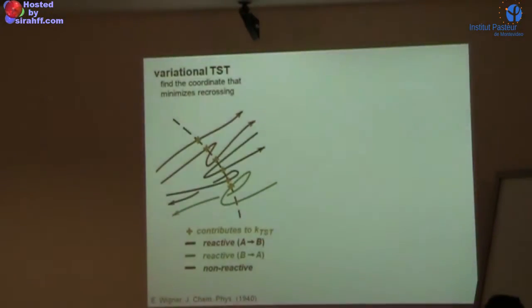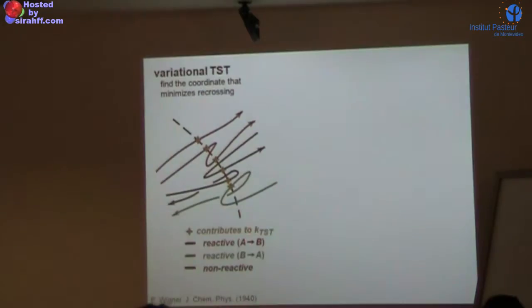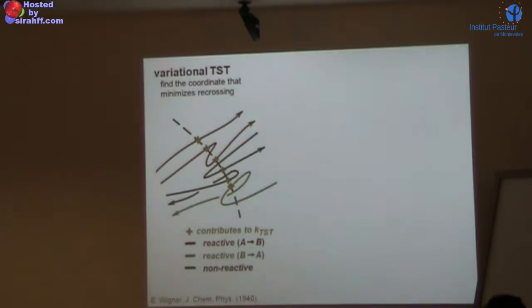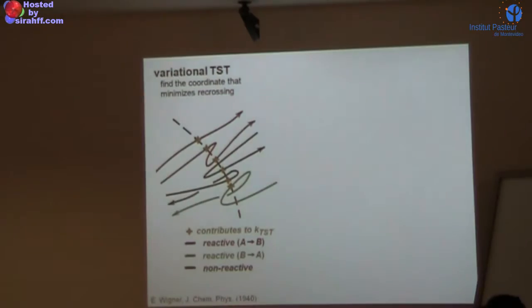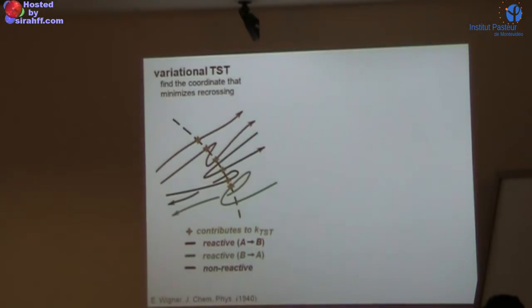Variational transition state theory: this is what's supposed to happen according to the assumptions, but there are many other possibilities that are over-counting the reactive flux through the barrier. The variational TST perspective says you should minimize these effects by finding a coordinate and dividing surface that minimize recrossing. If you move your dividing surface around in space, you can try and find a place where you don't see too many recrossings. That's the perspective Wigner took back in 1940.